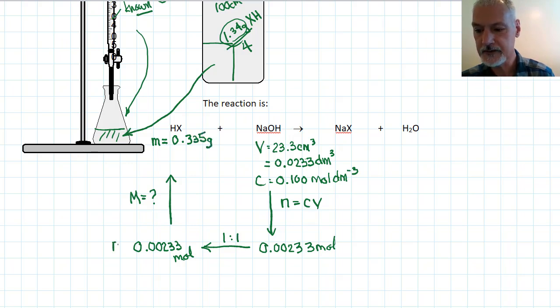The relationship we have from an older unit between moles, molar mass, and the mass of our substance, we can calculate the molar mass by taking our mass and dividing it by our number of moles. So, 0.335 grams divided by my number of moles. And that then gives me the molar mass of my acid to three significant digits as 144 grams per mole.